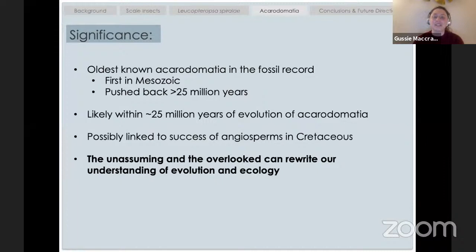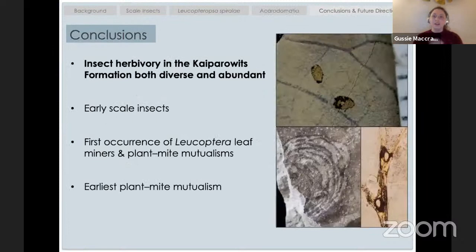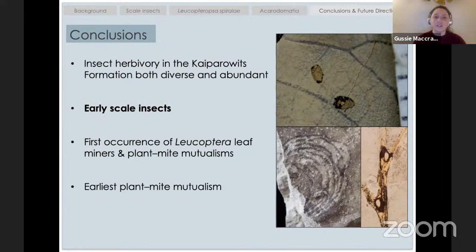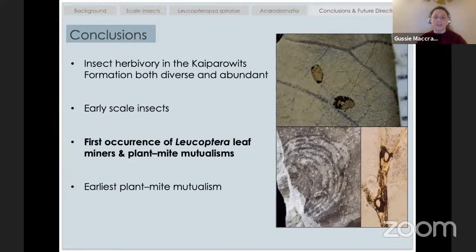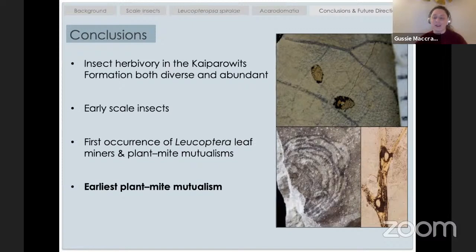In conclusion, insect herbivory from the late Cretaceous Kaiparowicz Formation is both diverse and abundant. We see some interesting natural history stories about early scale insects that might tell us about the evolution of that lineage in the fossil record. We also looked at the first occurrence of a Leucoptera leaf mine and thought more about the evolution of moths in general and leaf-mining moths. And I touched on the evolution of plant-mite mutualisms, their potential age, and their importance.